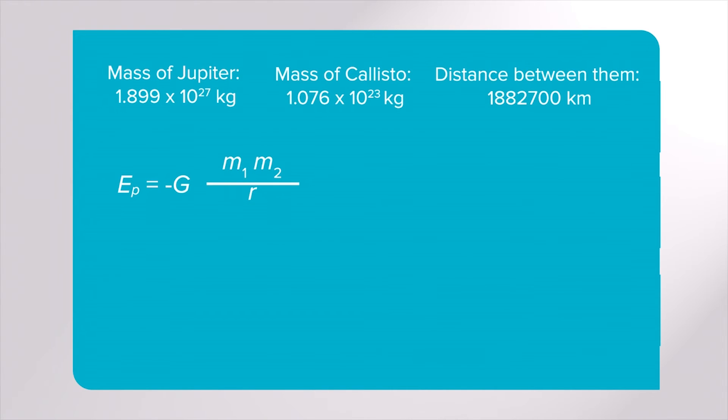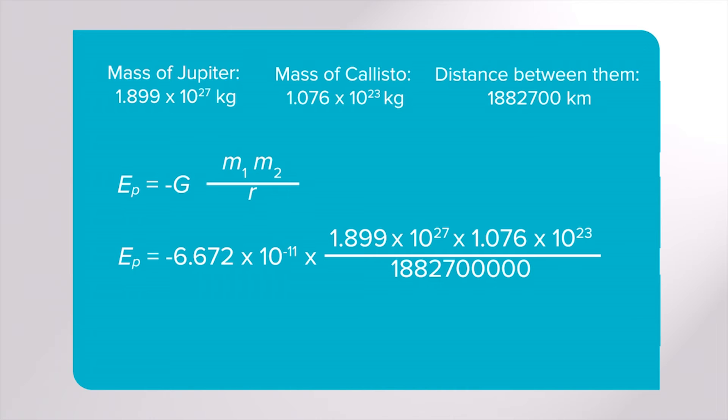Using the gravitational potential energy equation, substitute in these numbers. Be sure to convert kilometres to metres on the denominator. The gravitational potential energy between Jupiter and Callisto is calculated as minus 7.241 times 10 to the power of 30 joules. No direction is required as energy is a scalar quantity.